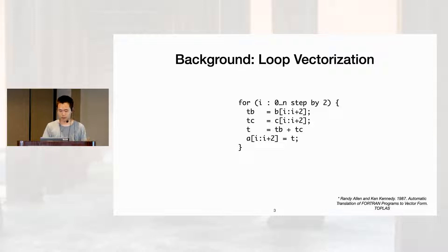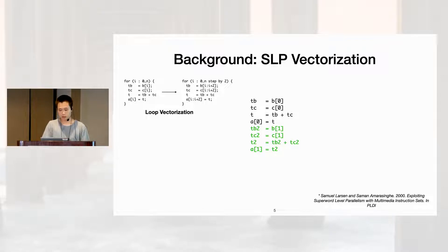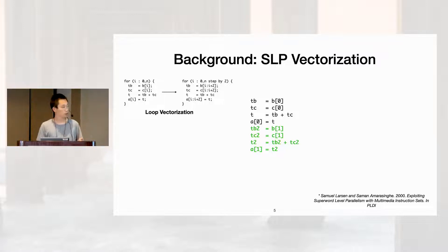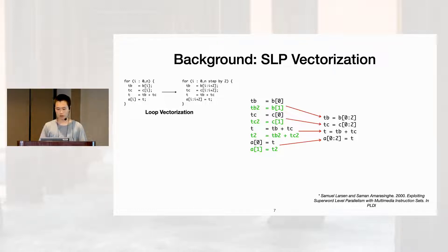Separate from loop vectorization, there's a later line of work called SLP vectorization. With SLP, or superword level parallelism, the idea is instead of directly vectorizing a loop, you try to vectorize a straight-line code region such as a basic block. You first identify code sequences that are independent and isomorphic, then reorder those instructions so the isomorphic ones are grouped together, and finish by packing them into equivalent vector instructions.